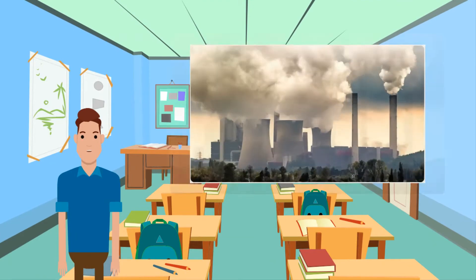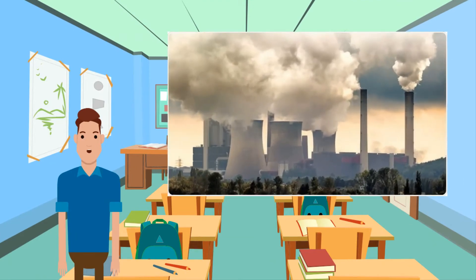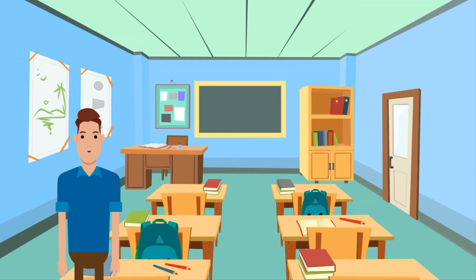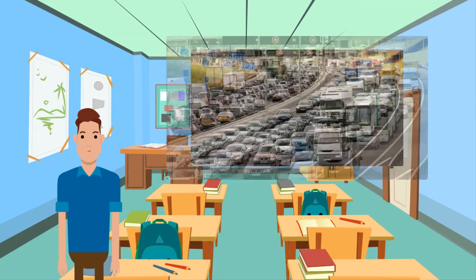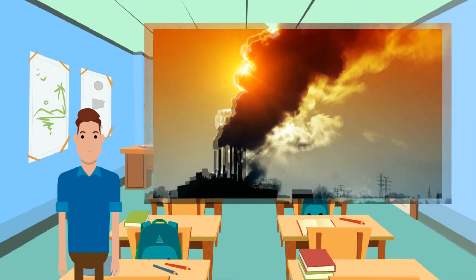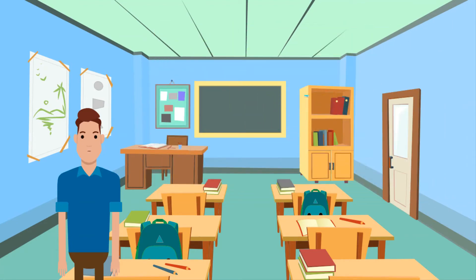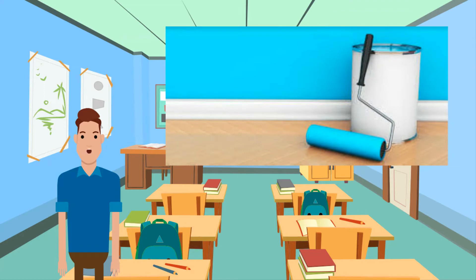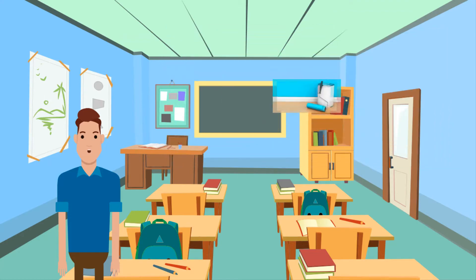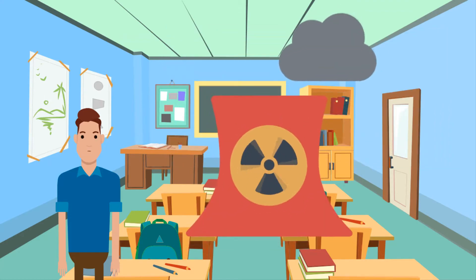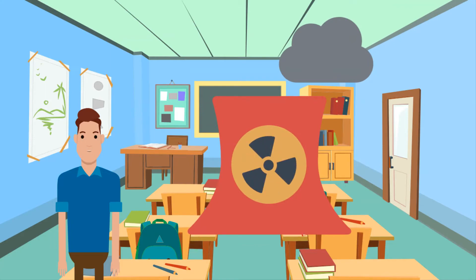First, let's talk about air pollution. Air pollution is the contamination of air by smoke and harmful gases, mainly oxides of carbon, sulfur, and nitrogen. Examples include: exhaust fumes from vehicles; the burning of fossil fuels such as coal, oil, or gas; harmful off-gassing from things such as paint and plastic production; and radiation spills or nuclear accidents.